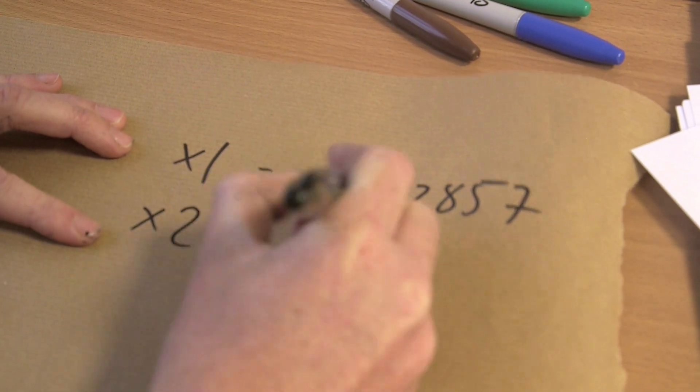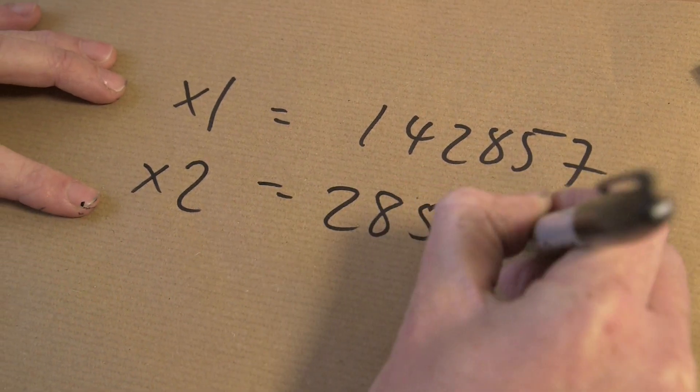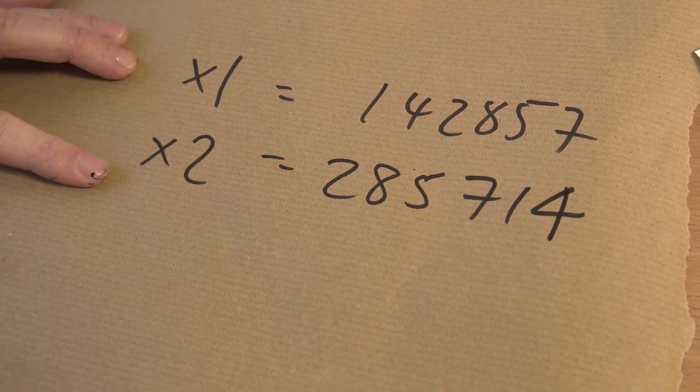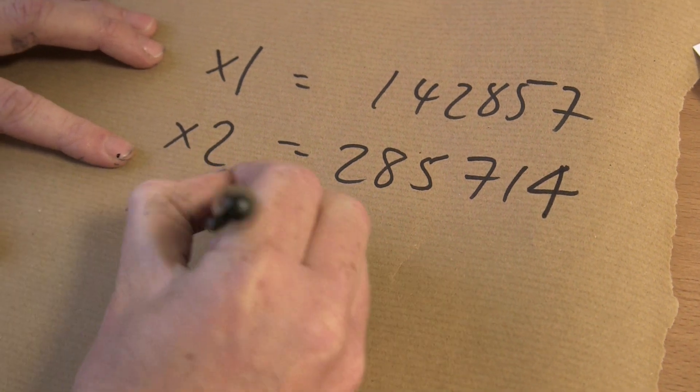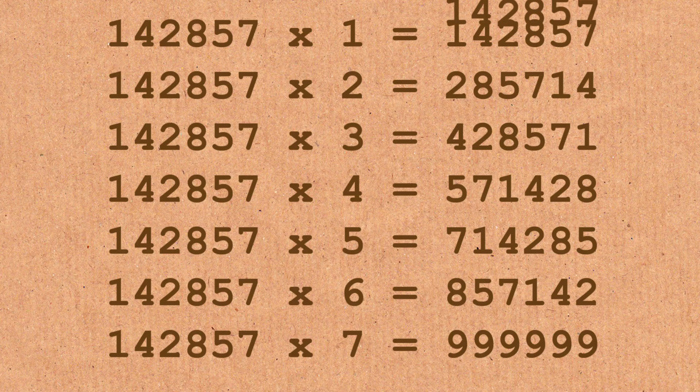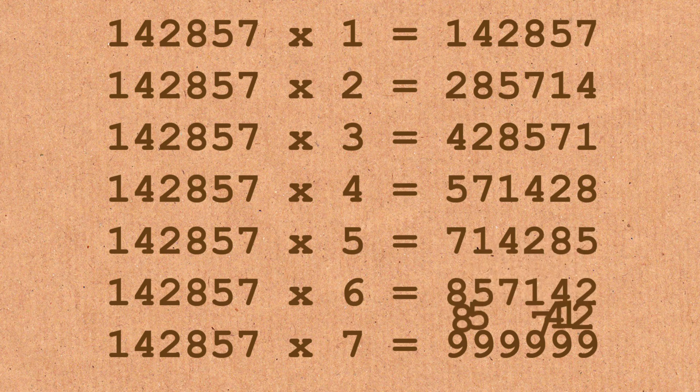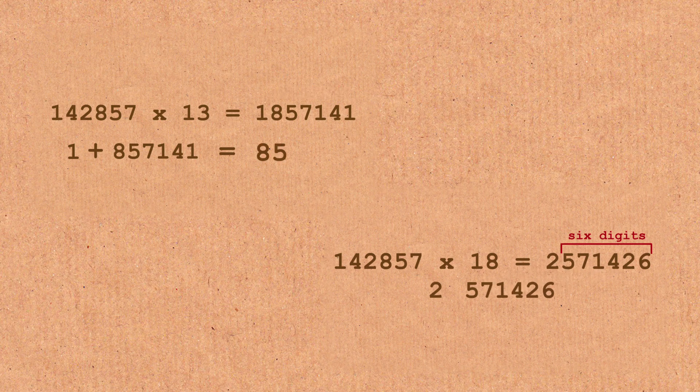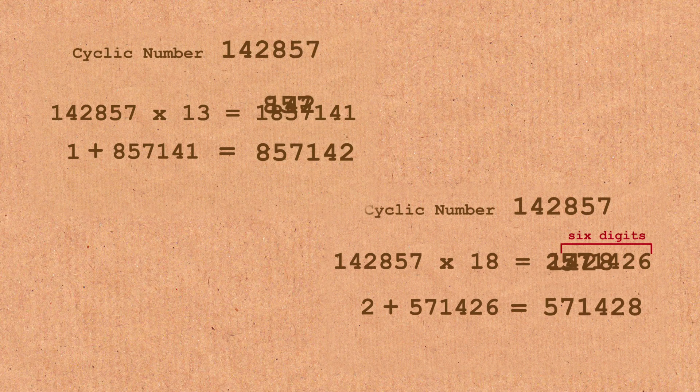If I multiply it by two, I get two, eight, five, seven, one, four. Which again, it's a permutation. Multiply it by three, I get four, two, eight, five, seven, one. And so on and so forth. And I can keep doing this. And if you go above seven, then you need to do this business of taking the last six and then adding it. But you'll always get this cyclic structure.